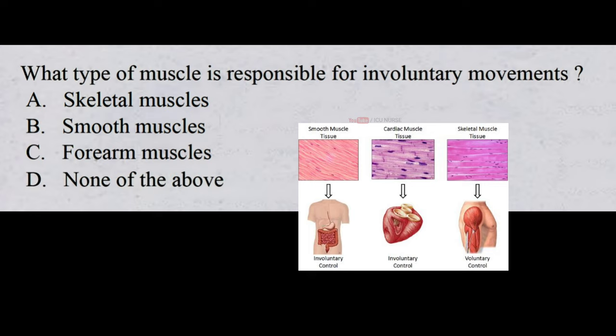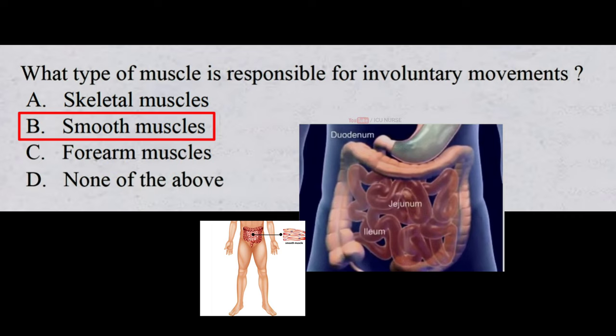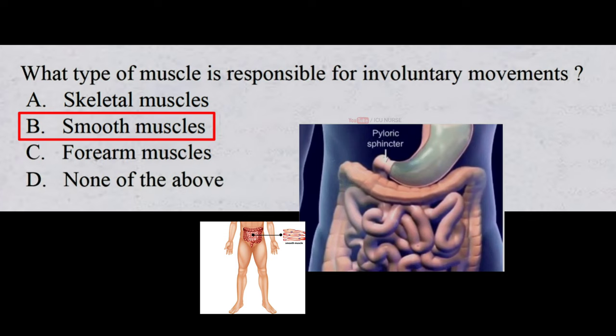And the correct answer is B. Smooth muscles. Involuntary movements in the body are the movements over which we have no control, and smooth muscles are the muscles which are responsible for involuntary movements in the body.